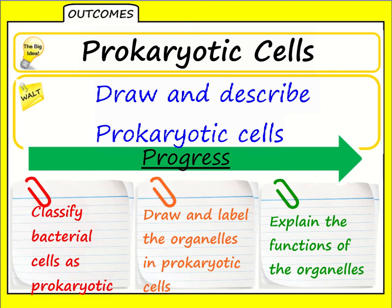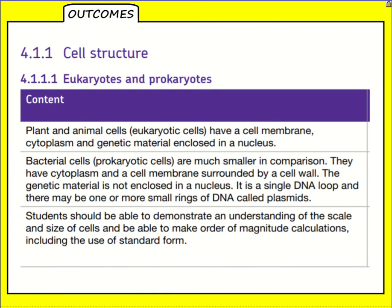Your specification tells you that bacterial cells are classified as prokaryotic cells and are much smaller in comparison to eukaryotes. They have cytoplasm and a cell membrane surrounded by a cell wall, and their genetic material is not enclosed in a nucleus.